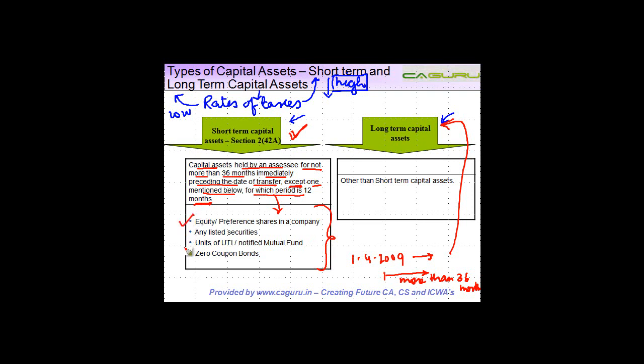And what are these four assets? First is equity or preference shares in a company. Second, any listed securities, which will mean your equity shares or preference shares or debentures, whatever it can be, if it's listed. Third, units of Unit Trust of India or notified mutual funds. And fourth, zero coupon bonds. So if either of these are held for more than 12 months, then it is a long-term capital asset, else it's a short-term capital asset.